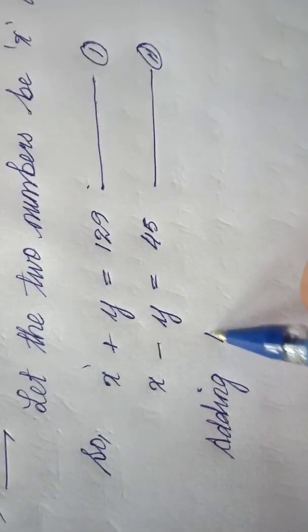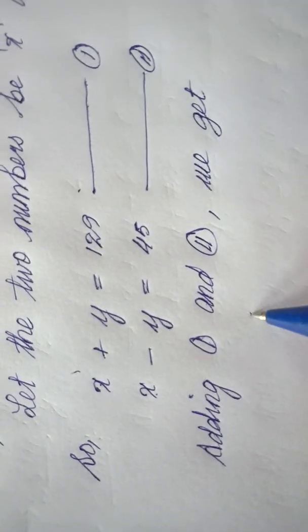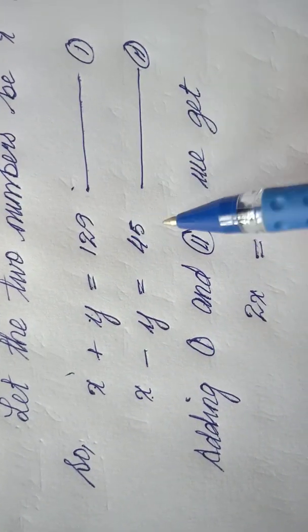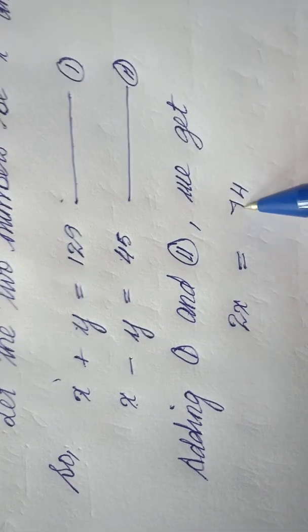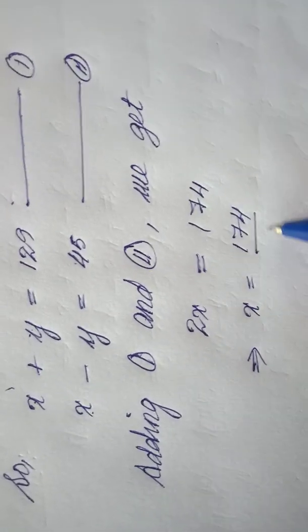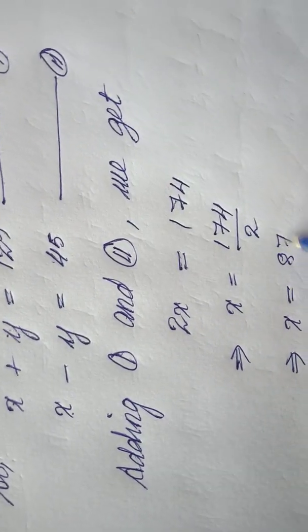Adding equation one and two, we get: if I add this one and this one it will become 2x. If I add these two together, plus y minus y is zero, equals 129 plus 45. Nine plus five is 14, carry one. Twelve plus two is six, then one, so 174. Then the value of x is 174 divided by 2.